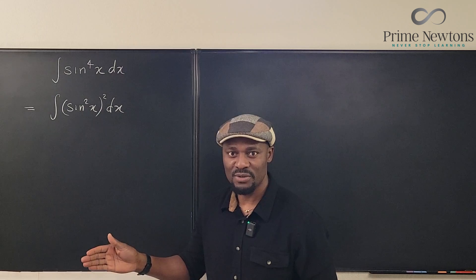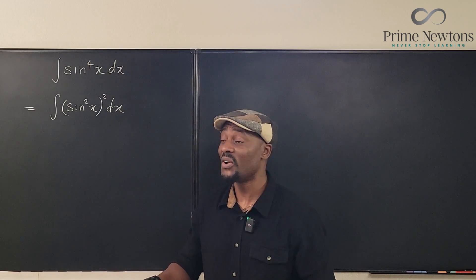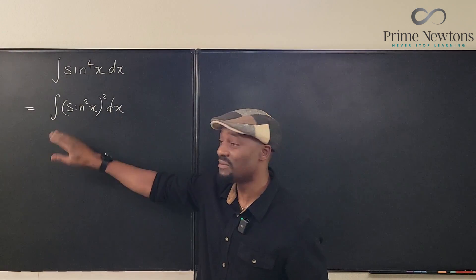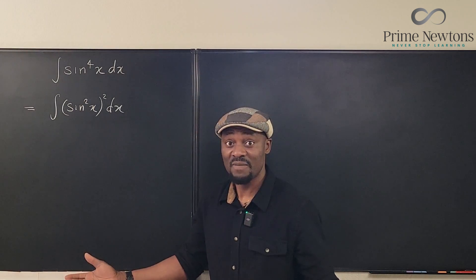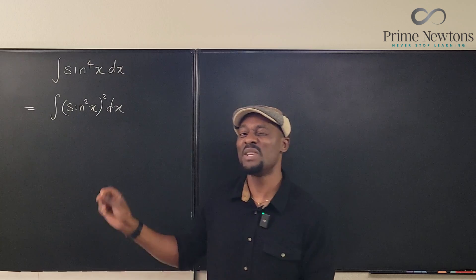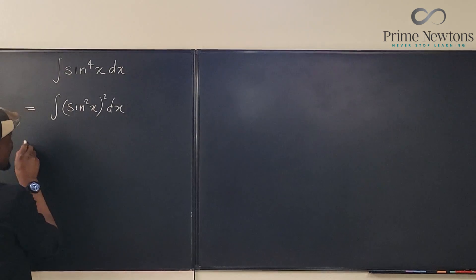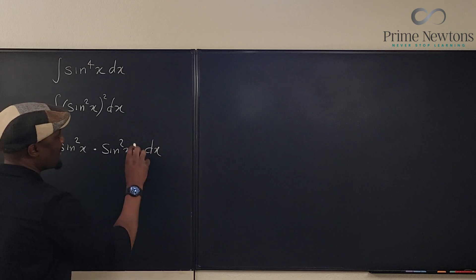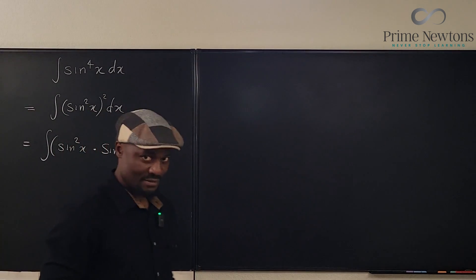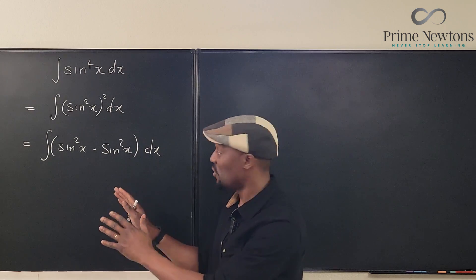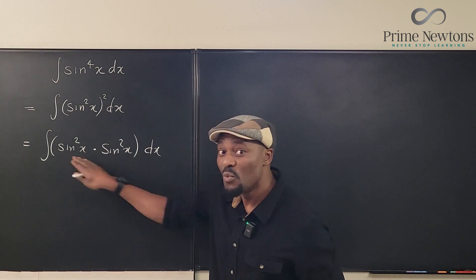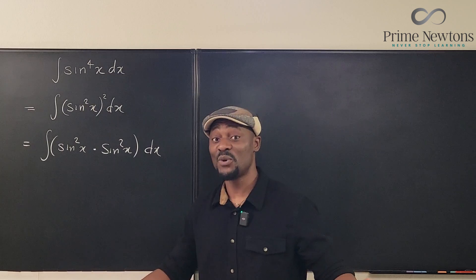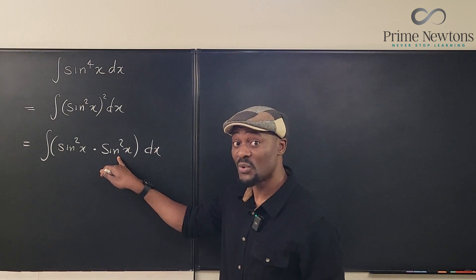Now, can we do u-substitution? Remember, don't do u-substitution unless there's also cosine beside the sine. If there's no cosine, u-substitution is not going to help because the derivative of sine generates a cosine and you can't get rid of it. So what you want to do is something that can bring cosine into the picture. We're going to write this as the integral of sin²x times sin²x, and I need to replace one of these with the Pythagorean trig identity: sin²x + cos²x = 1. So sin²x becomes 1 − cos²x. This gives us the integral of sin²x times (1 − cos²x) dx.